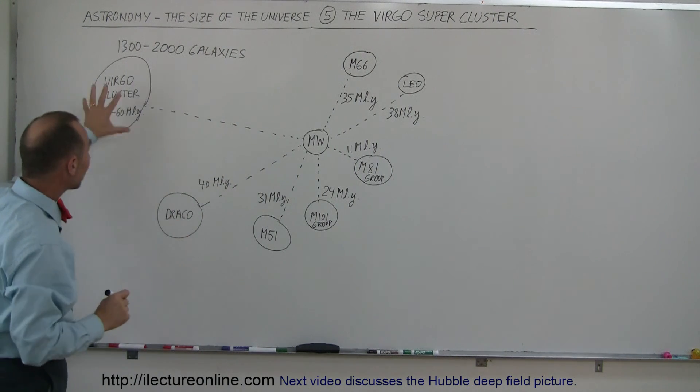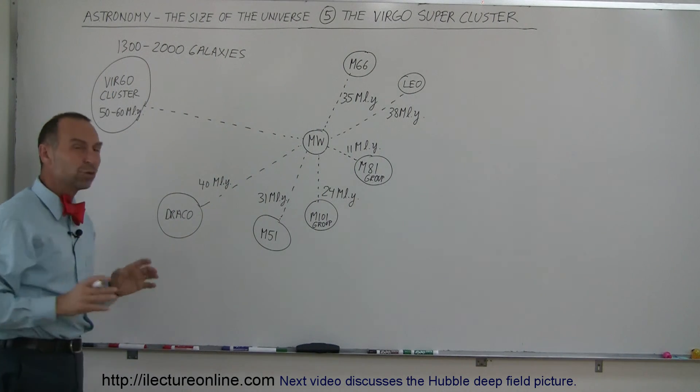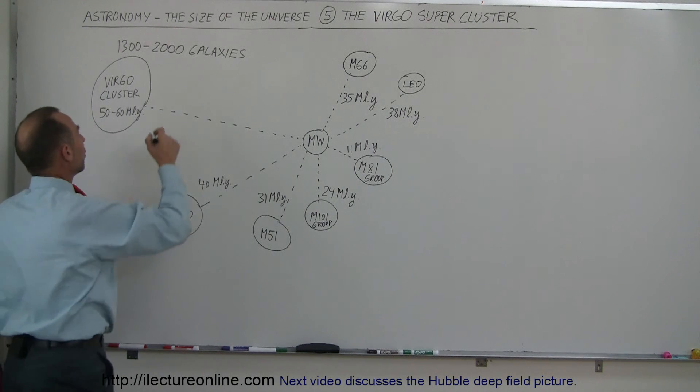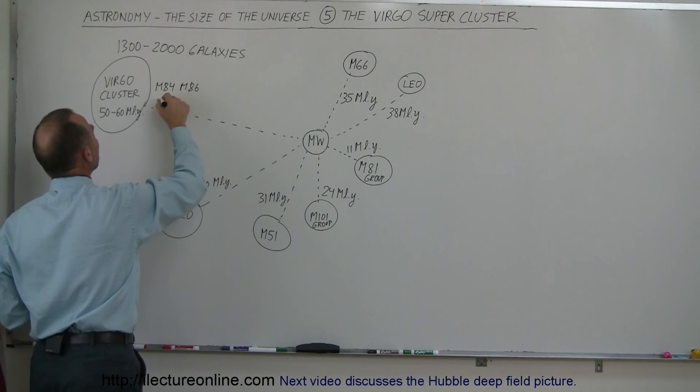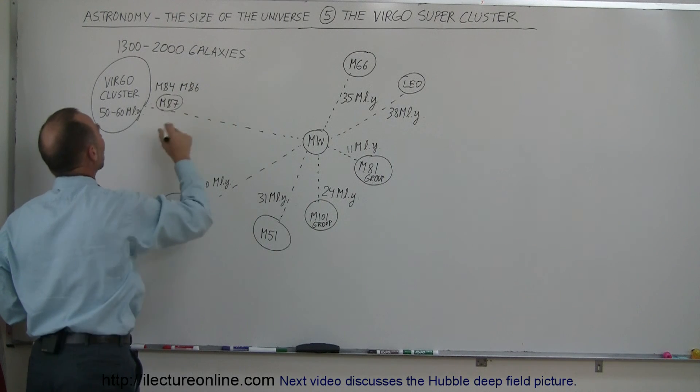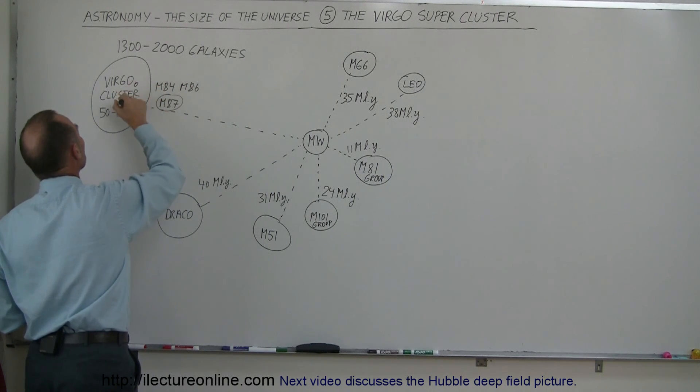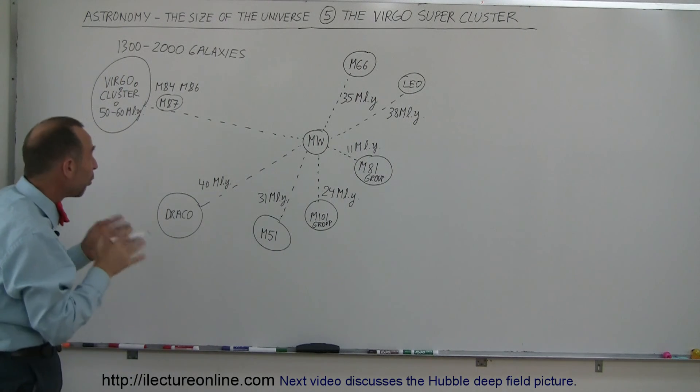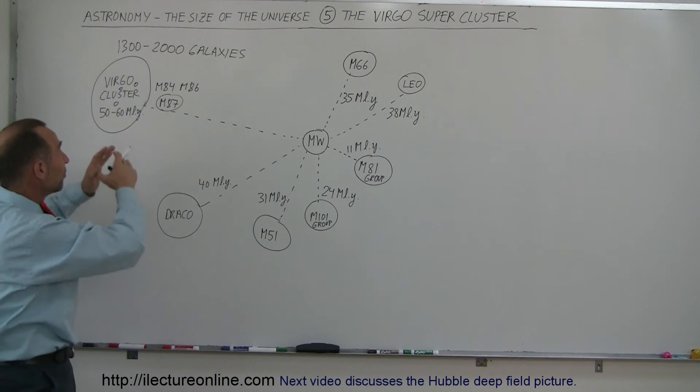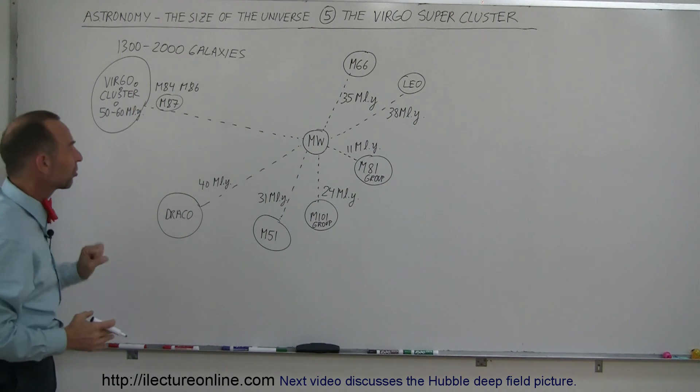And it is in this cluster of galaxies where we have some super-large galaxies. We have M84, and we have M86, and we have M87, which is the monster galaxy. These are what we call very large elliptical galaxies within the Virgo cluster. So these are just one or three of the more than 1,000 galaxies in this cluster.